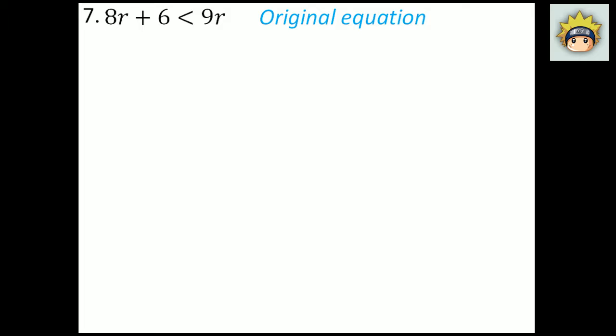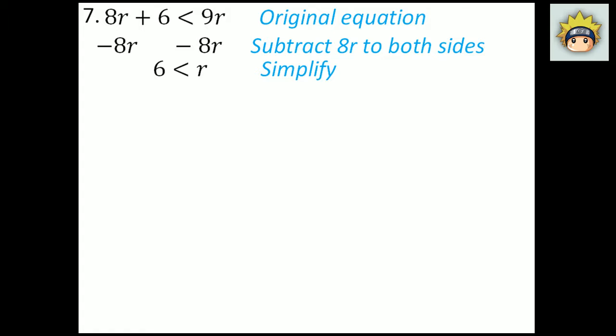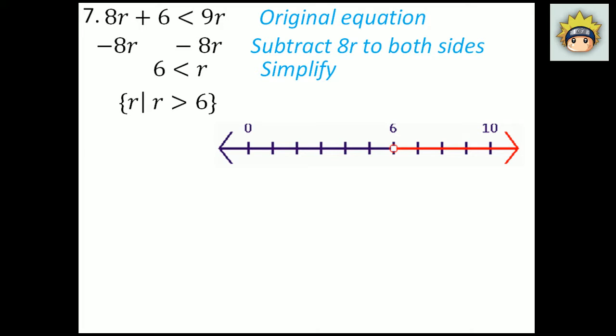Number 7. The original equation is 8r plus 6 is less than 9r. My goal is to get the variable alone — I see two variables, one on each side. The idea is to move the smallest variable term, which is 8r. Subtract 8r from both sides. What I have left on the left-hand side is 6. On the right-hand side, 9r minus 8r is r. So 6 is less than r. In set builder notation: r, r is greater than 6. It is an open dot on 6 going to the right, so r can be any value of 7, 8, 9, 10 and so forth.